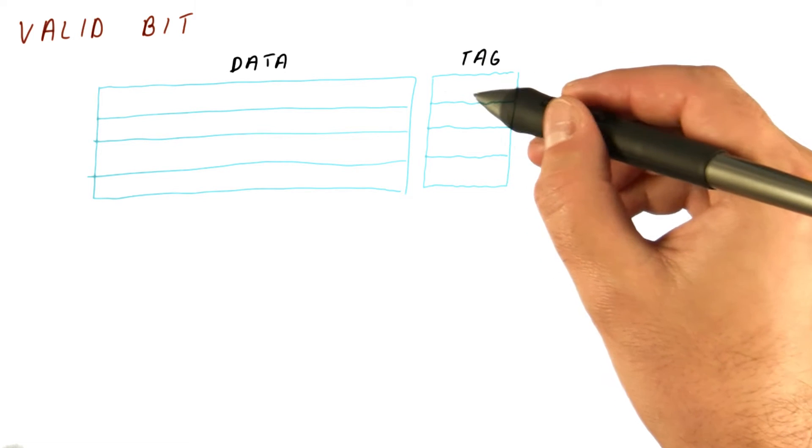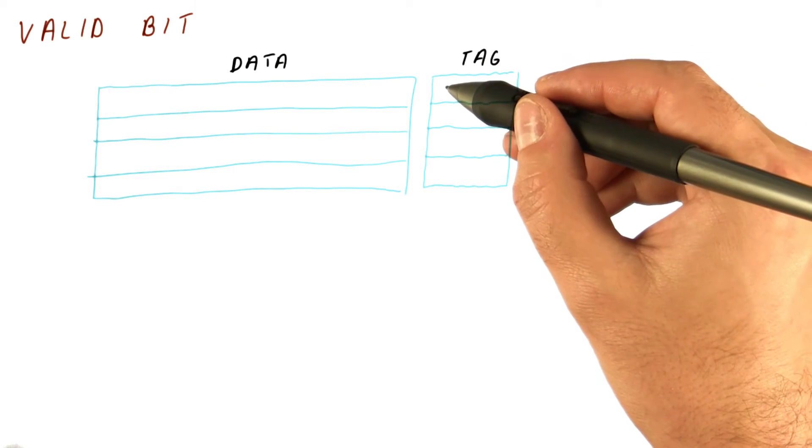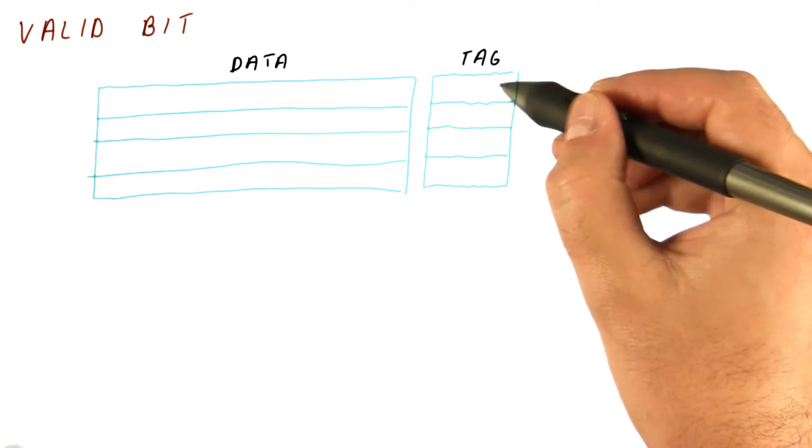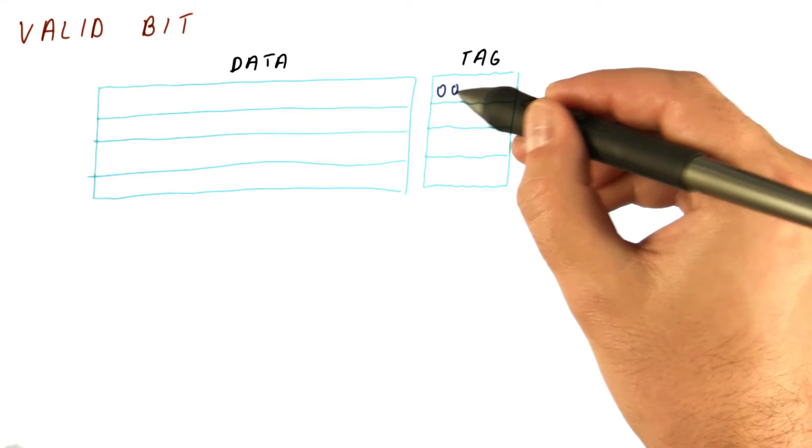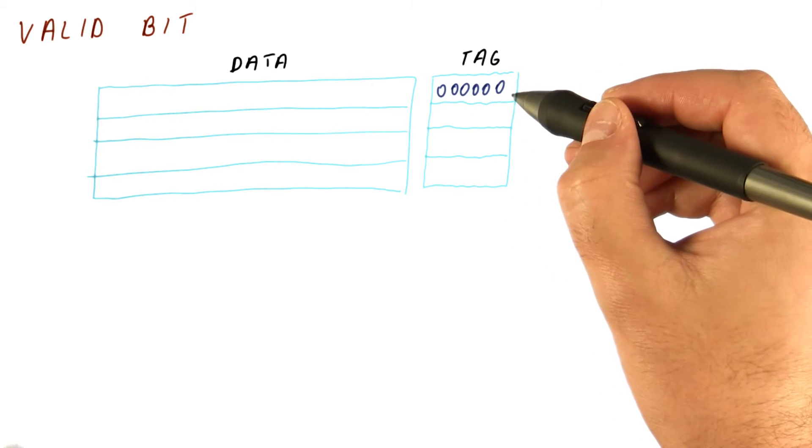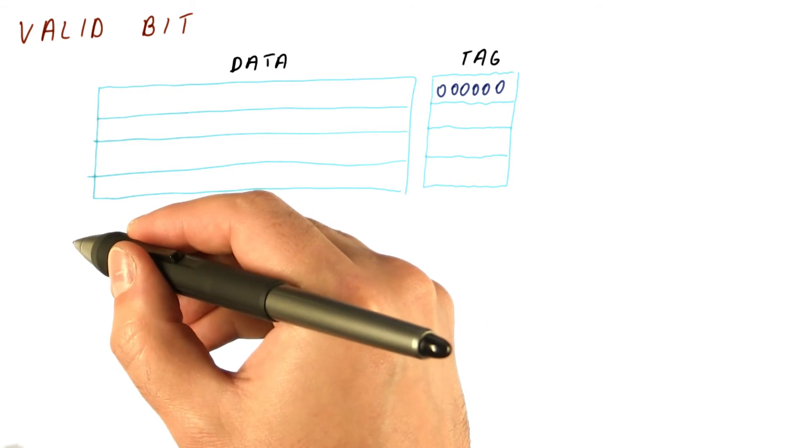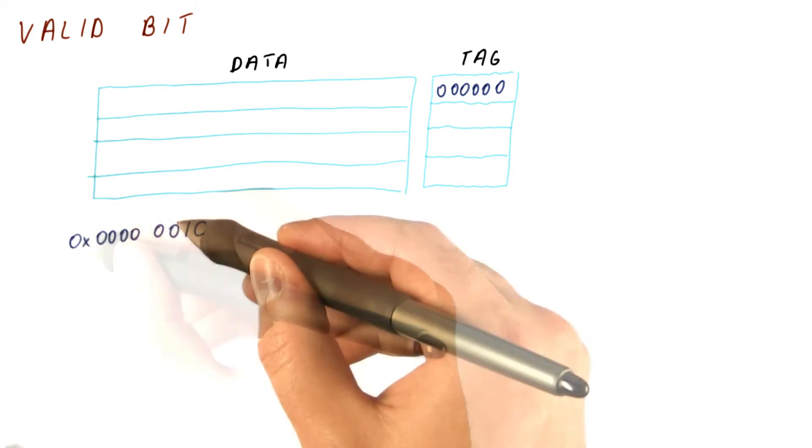We do this by matching the tag. But what does the tag initially have? If the tag initially just has all zeros, what if we are accessing an address like this?